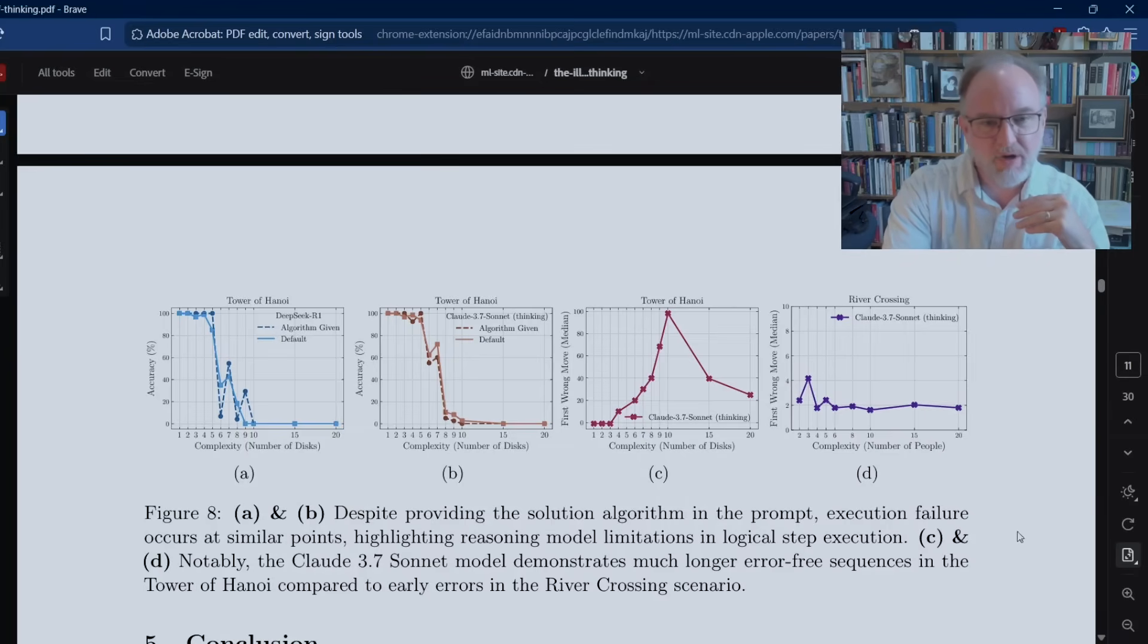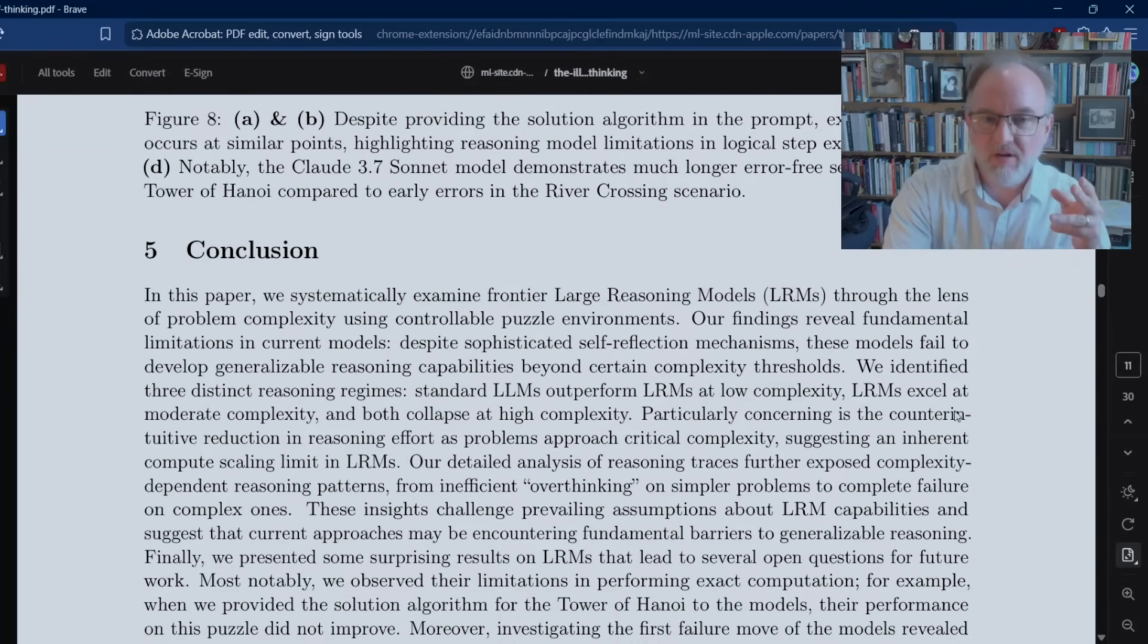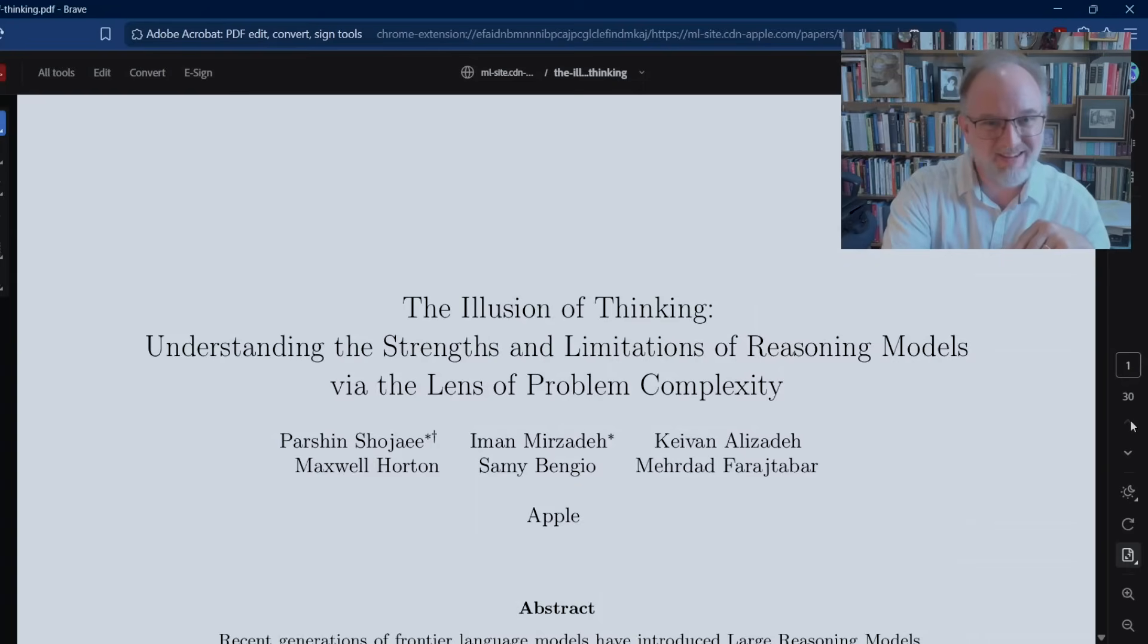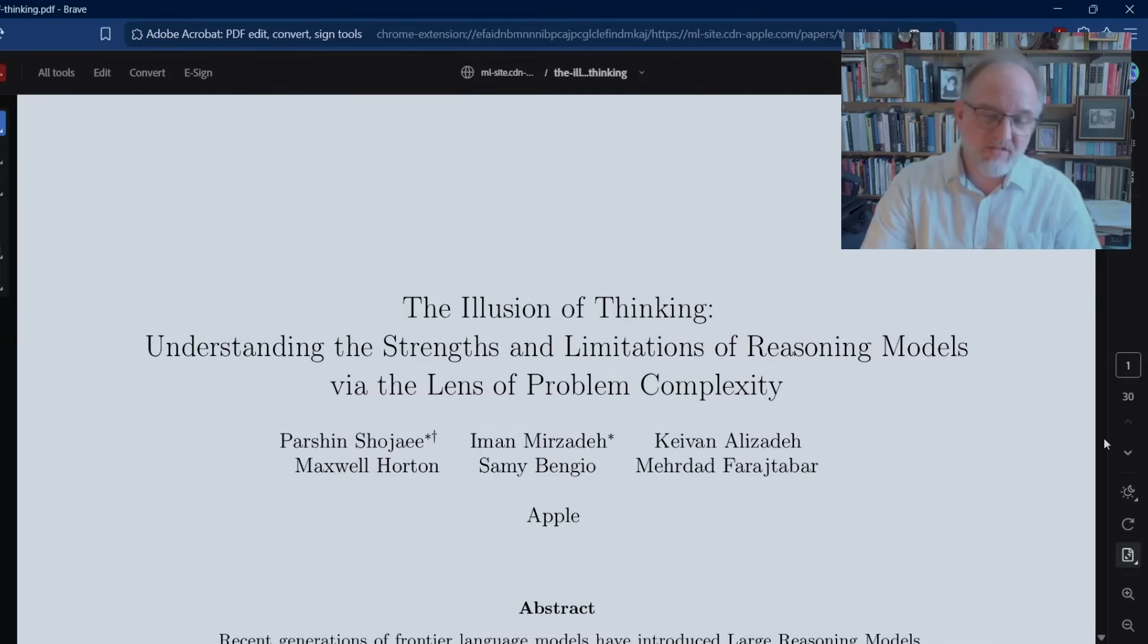Despite providing the solution algorithm in the prompt, execution failure occurs at similar points. So with or without the algorithm, right around a certain level of complexity, accuracy goes to zero. So I'm only on page 11 of this 30-page paper. There's an appendix. There's quite a lot of data following in it. I'd recommend that you read the whole thing. But I think I've gone about as far as I reasonably can in giving my commentary on this paper. Thanks again to my friend Zach Robinson of Rising Tide, who work in Last Mile Logistics. So I hope you've enjoyed this video. Thanks for watching today. Goodbye.